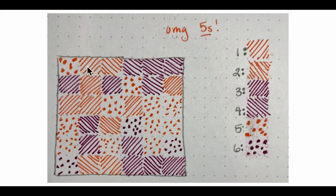In this grid you have one, two, three, four, five, six and then one, two, three, four, five, six. There's 36 squares in here and they wrote, oh my god, fives.